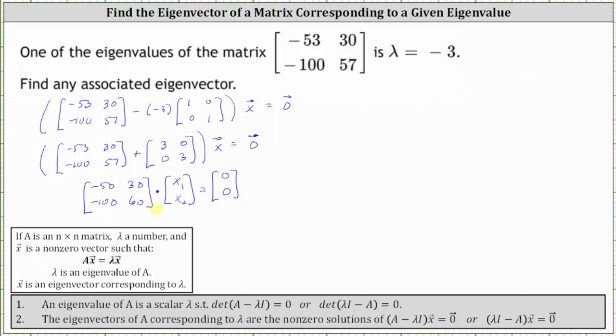And now we'll solve by writing an augmented matrix where the first row is negative 50, 30, zero, and the second row is negative 100, 60, and zero.